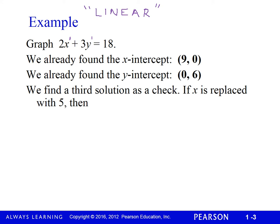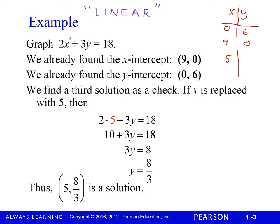We find a third solution as a check. Put 5 in for x. We got (0, 6) and (9, 0), but let's get a third point. Put 5 in for x and solve for y. We make the substitution: 10 + 3y = 18. Subtract 10 from both sides: 3y = 8. Divide both sides by 3: y = 8/3 or 2 and 2/3. So (5, 8/3) is also a solution.